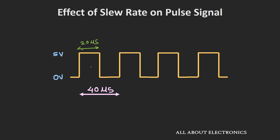Now let's see the effect of slew rate on a square wave pulse. Assume the output of an op-amp is a square wave varying from 0 to 5V, with a time period of 40 microseconds and an on-time of 20 microseconds. In the ideal case, the output should go from 0 to 5V in no time. But because of the slew rate of 0.5V per microsecond, let's see how the output gets affected.